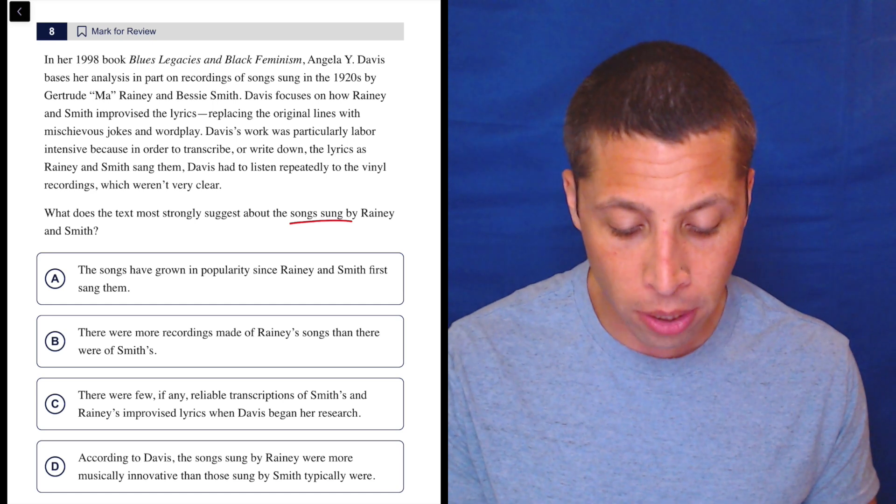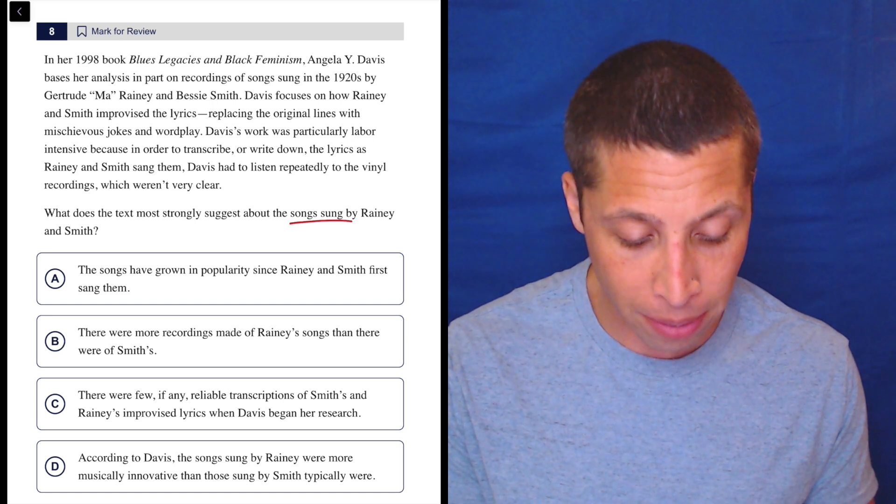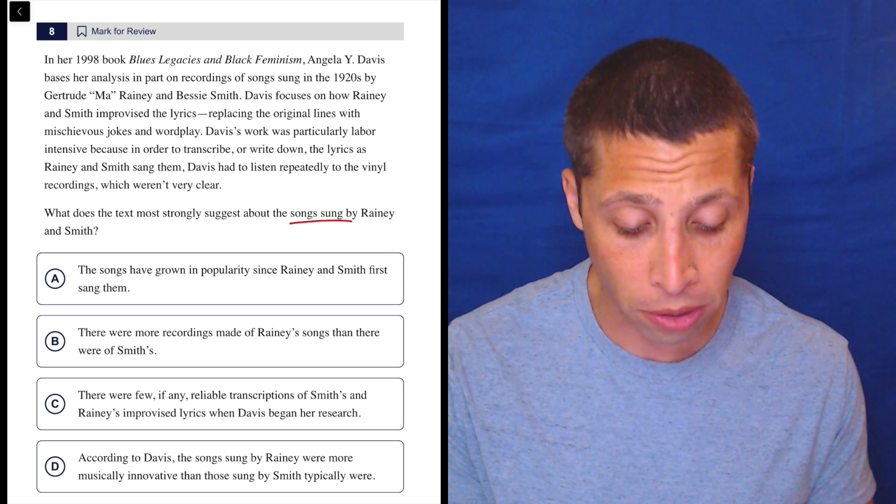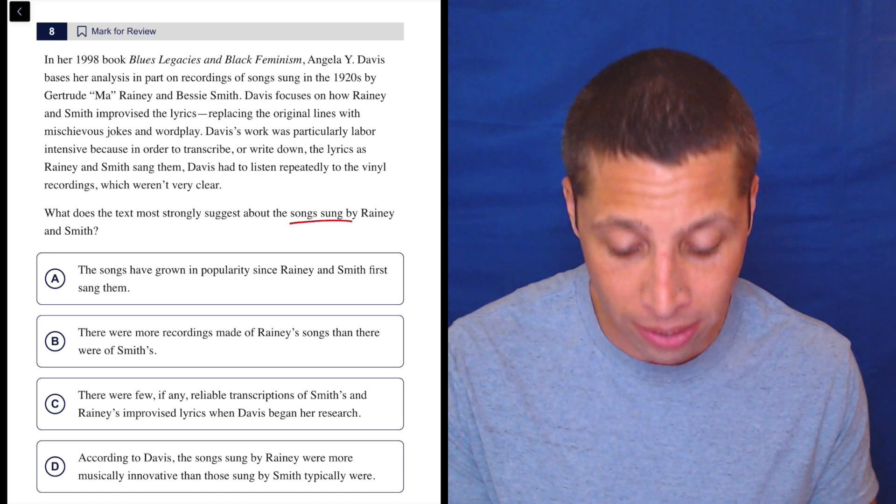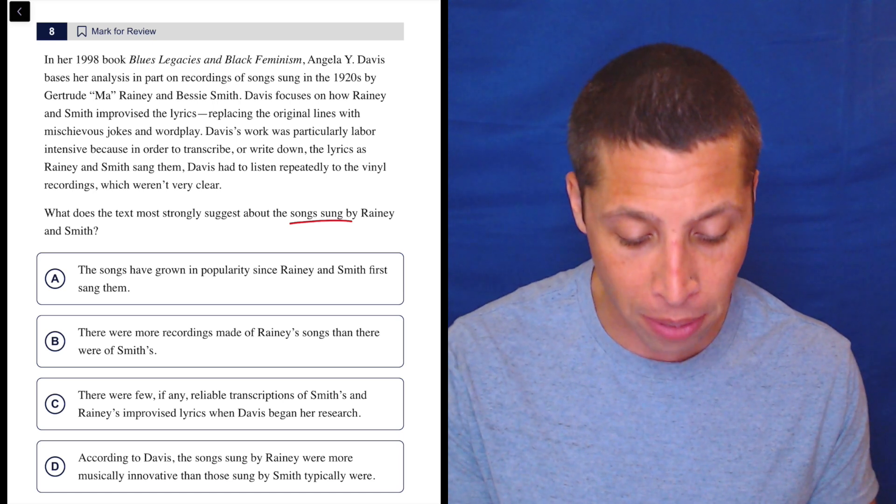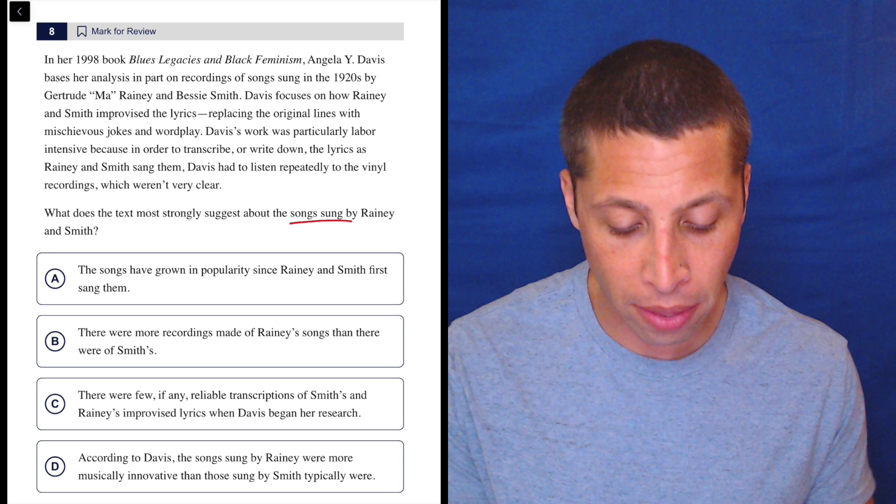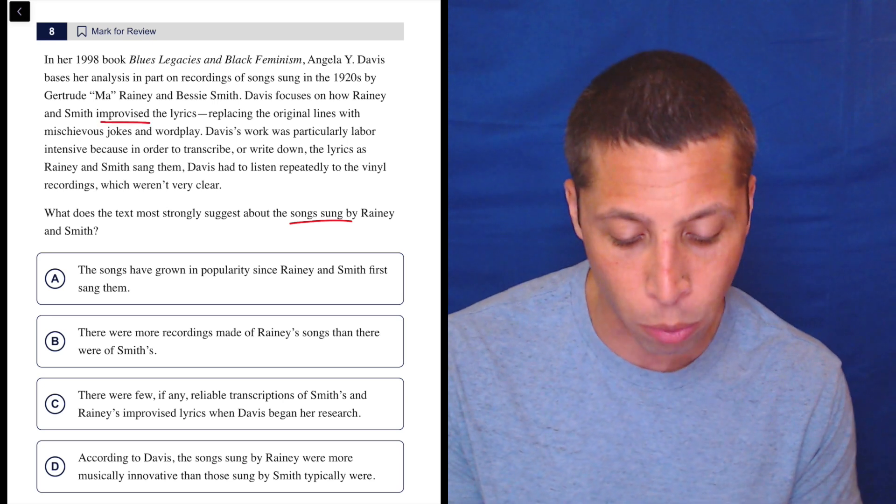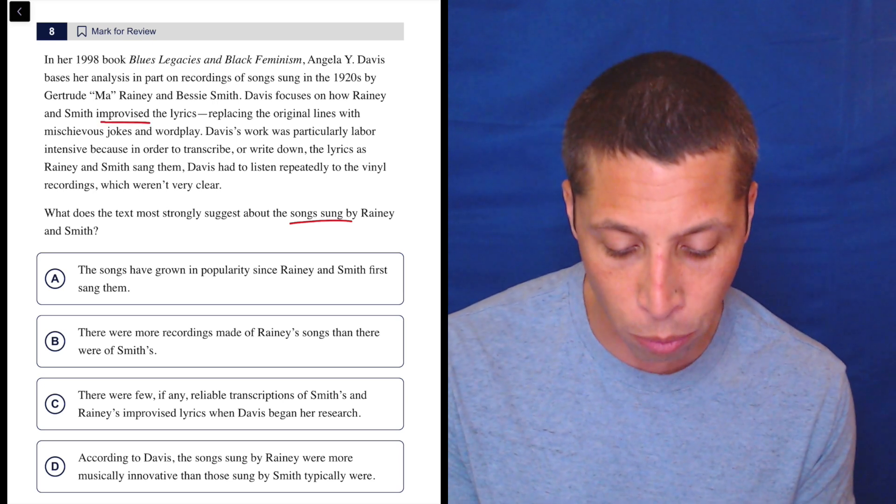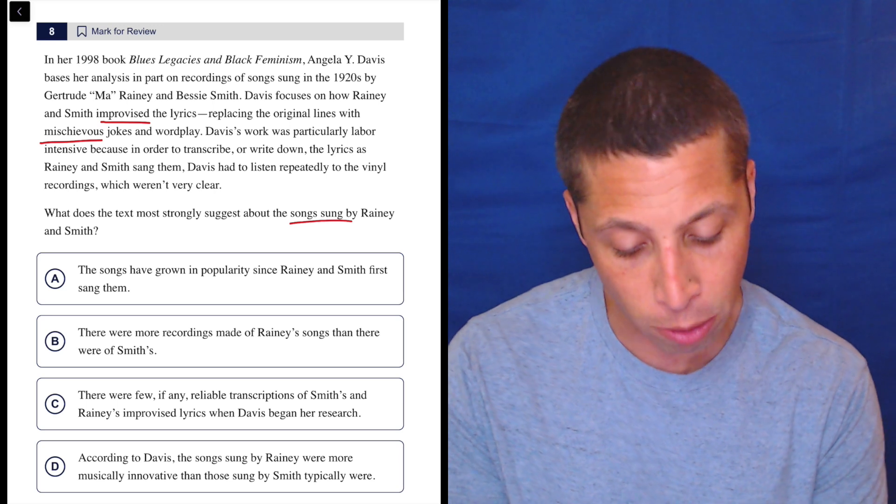In her 1998 book, Blues Legacies and Black Feminism, Angela Y. Davis bases her analysis in part on recordings of songs sung in the 1920s by Gertrude Ma Rainey and Bessie Smith. Davis focuses on how Rainey and Smith improvised the lyrics - so improvised strong word - replacing the original lines with mischievous jokes and wordplay. So mischievous kind of stands out to me there.